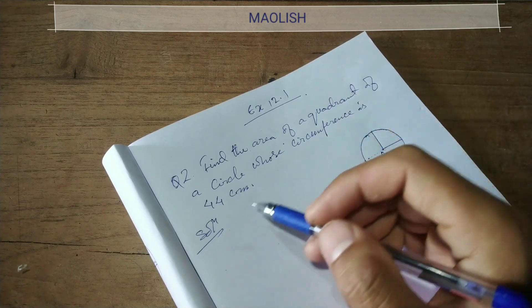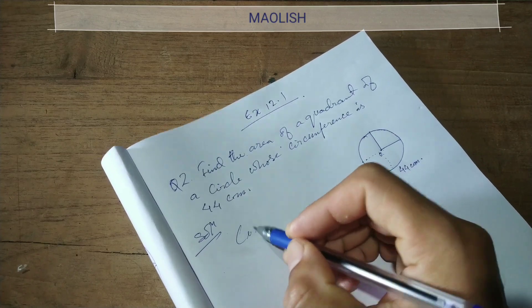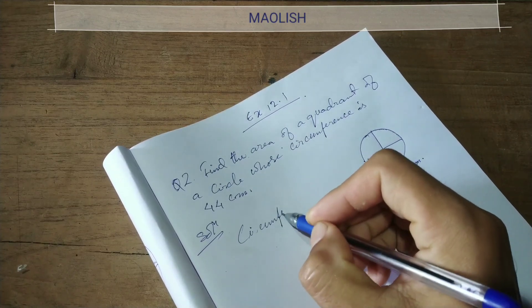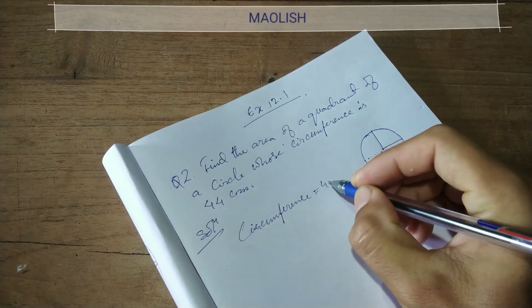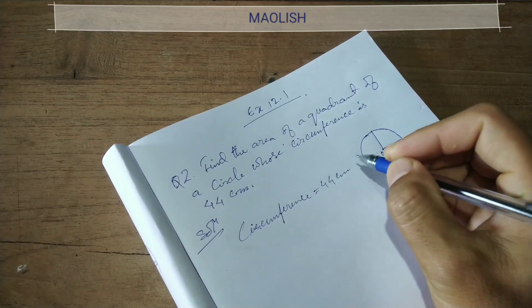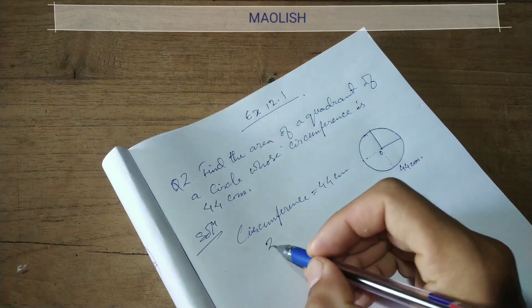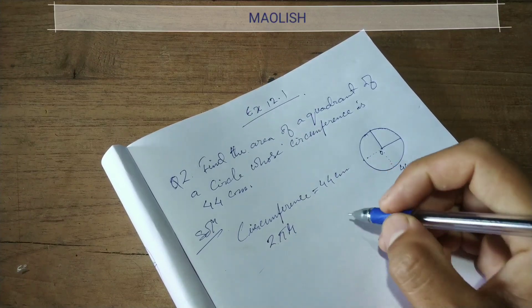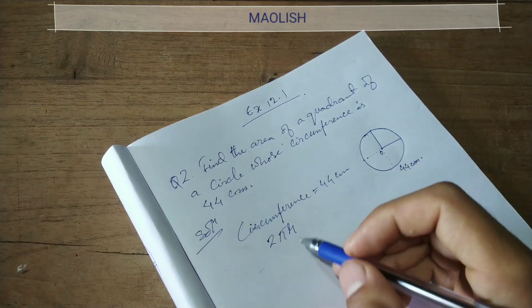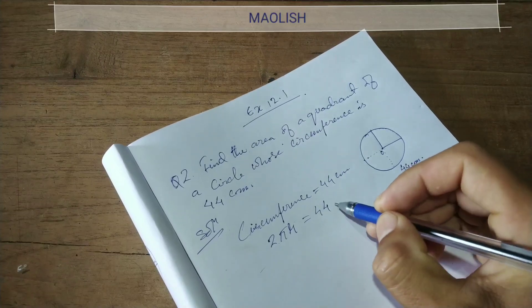How can we find radius? We have here circumference. Circumference equal to 44 cm. Circumference of a circle formula is 2 pi r, equal to 44 cm.